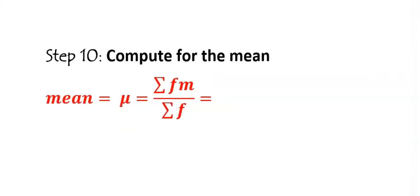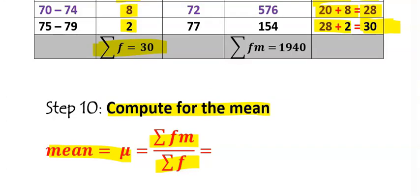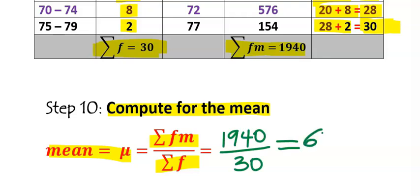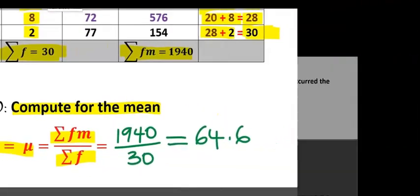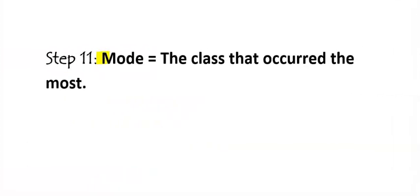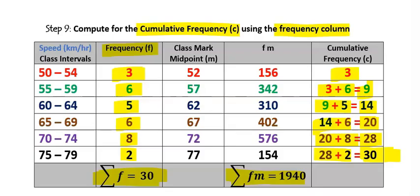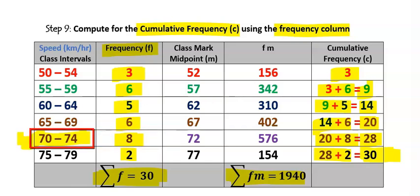Step ten: compute the mean using the formula mean = Σ(f×m) / Σf. From the table, dividing 1994 by 30 gives a mean of 64.6. Step eleven: compute the mode. The modal class is the class with the highest frequency, which is 70–74. This is the modal class, so 70–74 is the mode class.